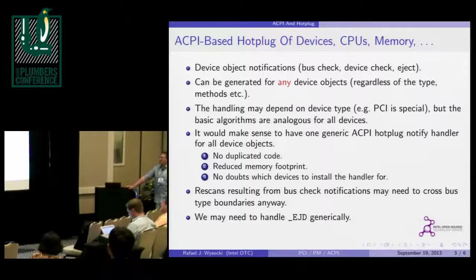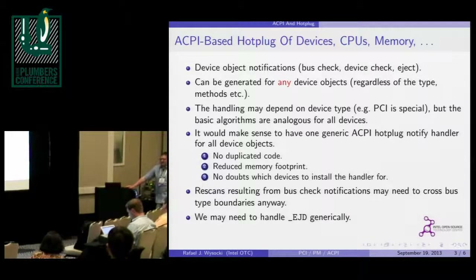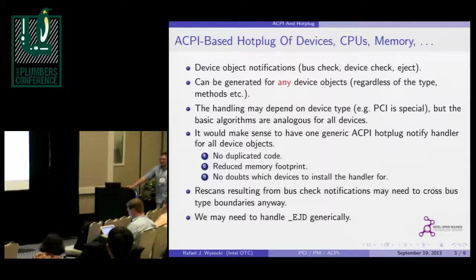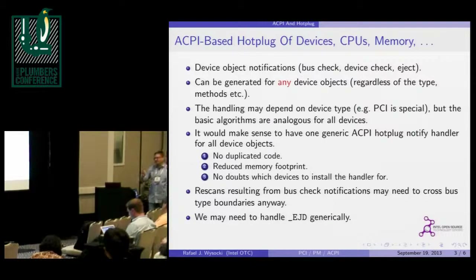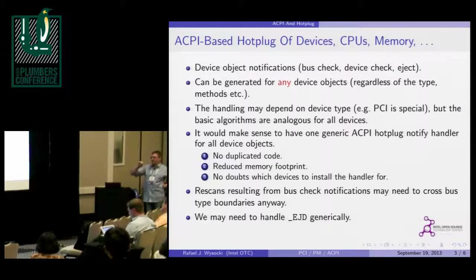Bus check, device check, and eject — eject is a request for ejecting a device. Device check is a notification that the device either has appeared or has gone, so you should add or remove it from our structures. Bus check is a notification to re-scan the bus from a given point, so if we get a bus check, we should re-scan everything below that device object.